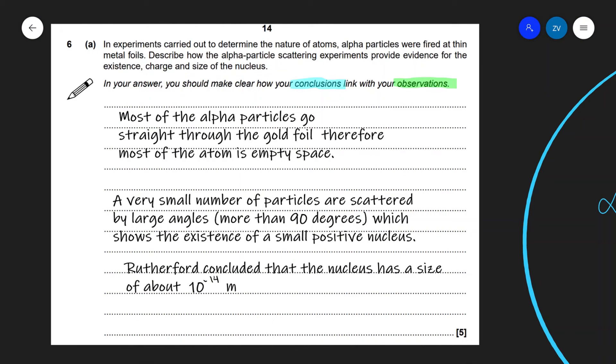Okay guys, so let's have a look at my solution. Now, first off, please make sure that we've fully answered the question and we have linked our conclusions with our observations. Most of the alpha particles go straight through the gold foil. And this is an example of an observation. That's why I'm going to be highlighting this in green. Of course, in the real exam, you don't have to highlight this. However, I just want to make it absolutely clear which bit of the answer is a conclusion.